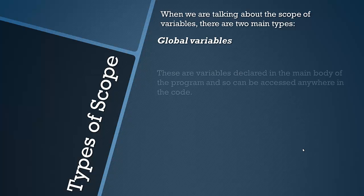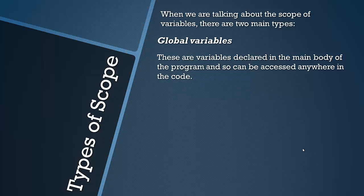You have global variables. And these are the variables declared in the main body of the program and so can be accessed anywhere in the code. So if we're thinking of our sniper visual representation of this, you wouldn't be zoomed in at all. You'd be at the furthest, at the lowest level of zoom. So you can see the whole program and anything declared in that section can be accessed anywhere.